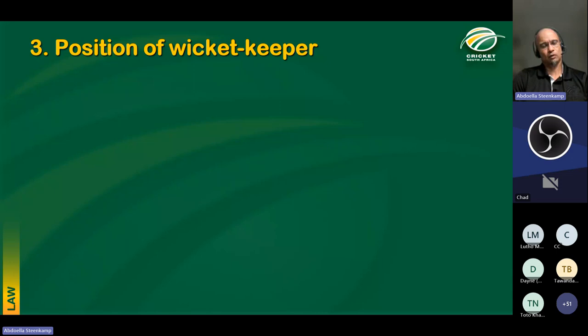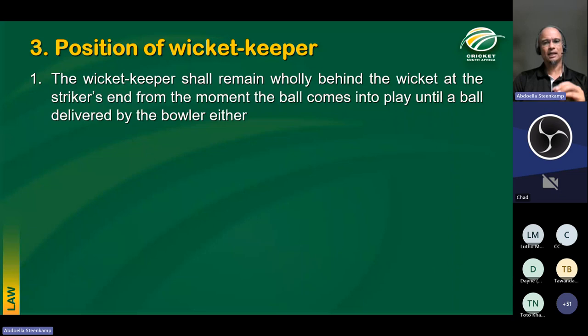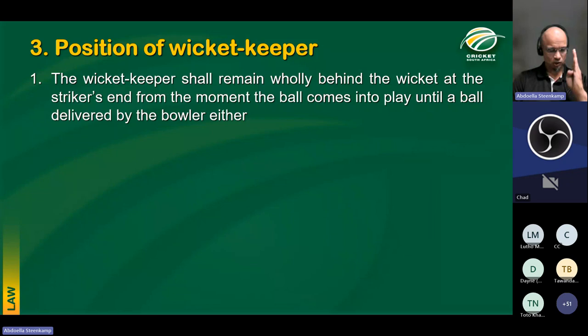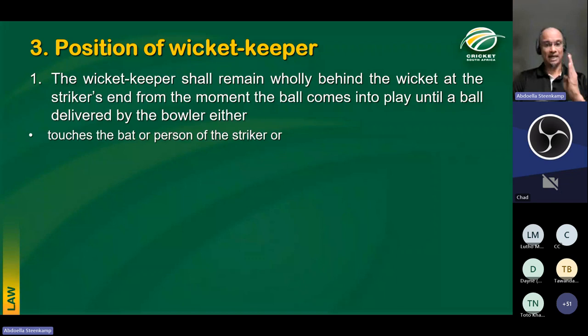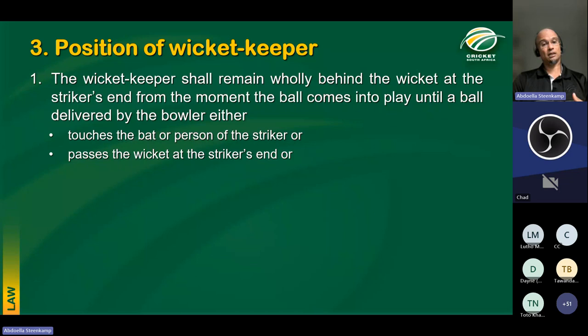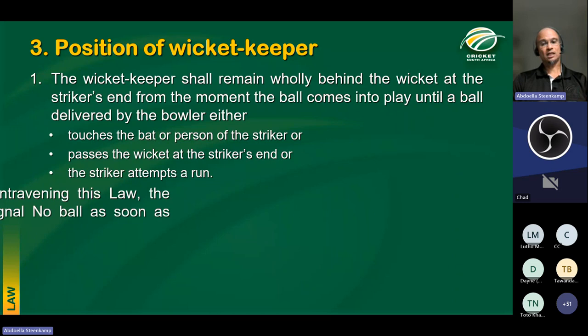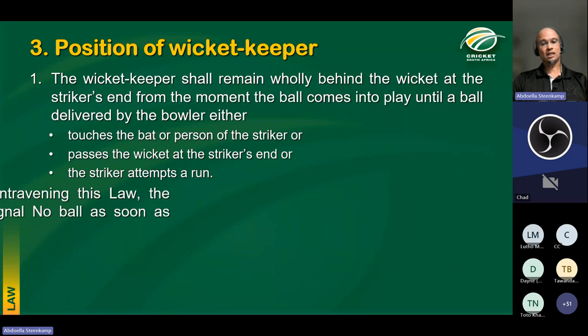Where does the keeper stand? The law requires the keeper to remain wholly behind the wicket at the striker's end from the moment the ball comes into play until the ball is delivered by the bowler. The keeper can only come in front of the stumps if the ball touches the bat or person of the striker, if it passes the wicket at the striker's end, or if the striker attempts a run. If a wicket keeper contravenes this law, the striker's end umpire — who is in the best position to observe — shall call and signal no-ball.